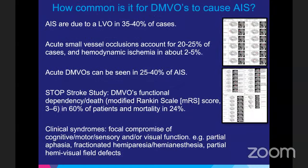How common is this? About 40% of acute ischemic stroke cases are due to large vessel occlusions, and around 25 to 40% are due to a primary distal vessel occlusion. The symptom presentation is more heterogeneous and difficult to diagnose. Since it involves more focal tissue, patients might present with partial symptoms — partial hemiparesis, partial hemivisual field cuts. This is not a benign condition; dependency and death can be up to 60% and mortality up to 25 to 40%.